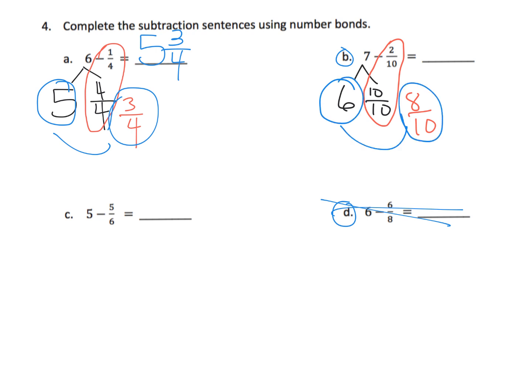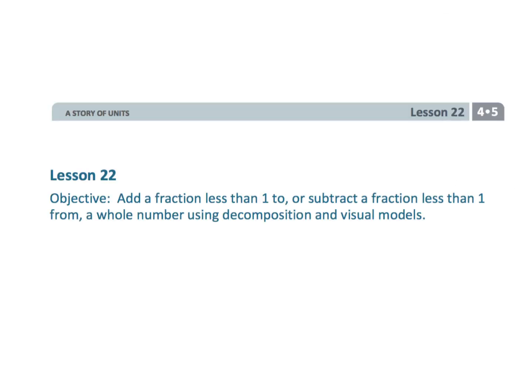Now we can subtract. So 10 tenths minus 2 tenths is 8 tenths plus the 6 we had left over at the beginning. And so our answer is 6 and 8 tenths. Teachers, if your students want to simplify that and change it to 6 and 4 fifths, they're absolutely welcome to. But right now we're perfectly happy with 6 and 8 tenths. And that wraps up fourth grade module 5 lesson 22. Little special cases when we're dealing with subtracting from one whole or adding to one whole. We're using visual models but we're also kind of leading towards that standard algorithm.